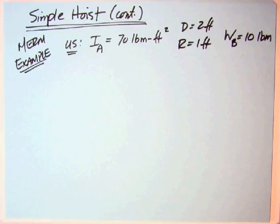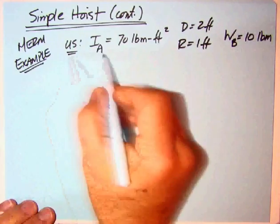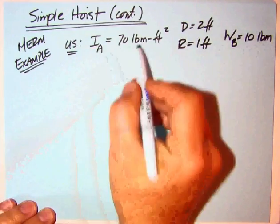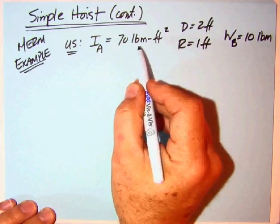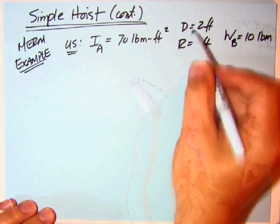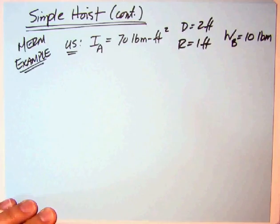The MERM example has both sets of units, and we'll do both. In the U.S. system, given I sub A is 70 pound mass feet squared. We know we need slugs there, so we're going to divide by 32.2. You're given the diameter is 2 feet, so the radius is 1 foot.